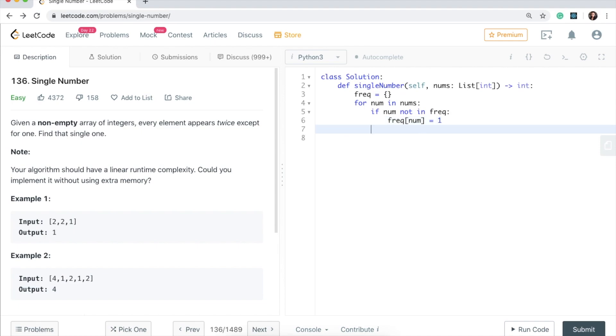So that's the first case. And then else if that number occurs again, that means it's not a single number. So we will increment the count. So I will say frequency num plus equal one. So that's good.